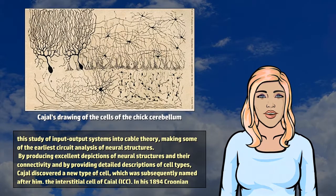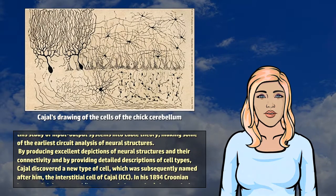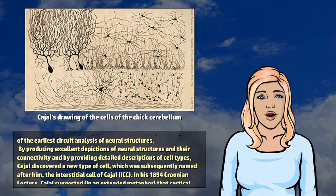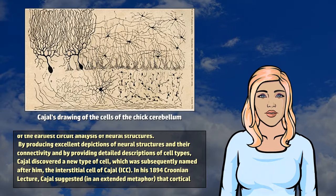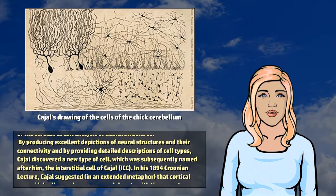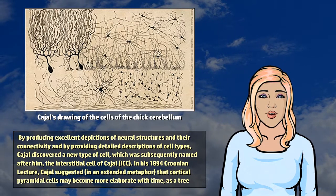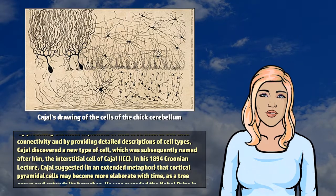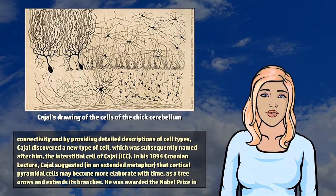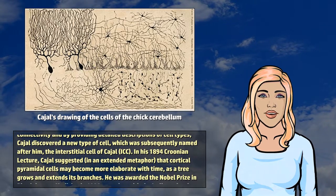By producing excellent depictions of neural structures and their connectivity and by providing detailed descriptions of cell types, Cajal discovered a new type of cell, which was subsequently named after him: the interstitial cell of Cajal, or ICC.